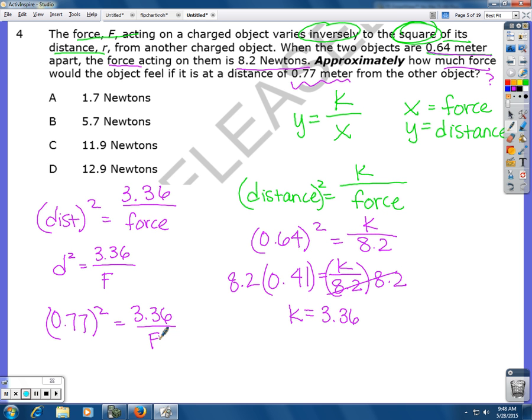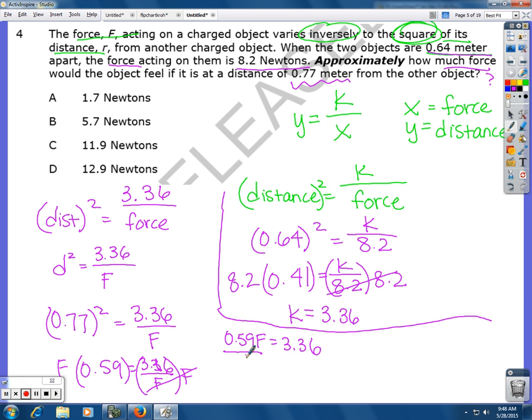So, 0.77 squared is 0.59. That should be a 3.6 over F. I have to get my variable out of the denominator. So, I'm going to multiply both sides by F. I'm going to move over here. So, then 0.59 F equals 3.36. To get F by itself, divide by 0.59. And F, which is the force, is going to equal 5.69. Which our closest answer over there is going to be B.